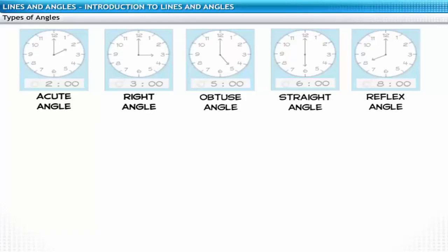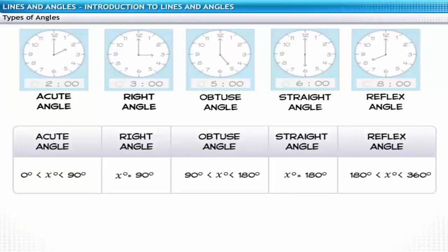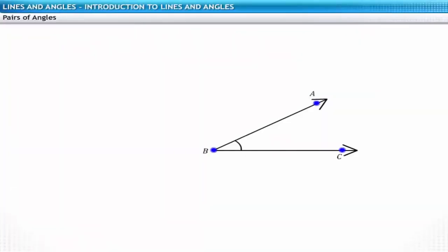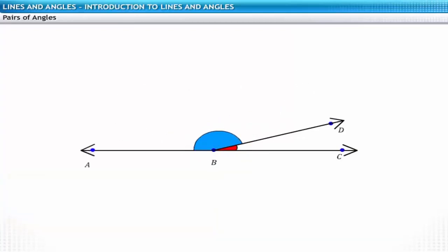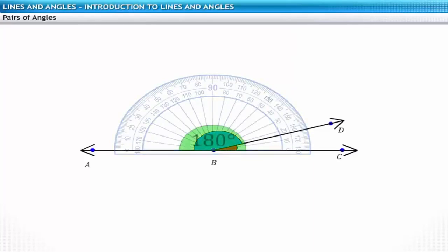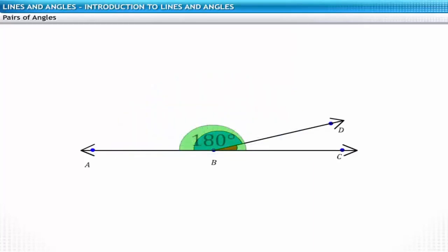Before moving on, let's summarize the definitions also shown on the screen. Consider the angle ABC. Pass the ray BD through the vertex such that it divides the angle ABC into 2. The two angles that are formed are angle ABD and angle DBC. These angles have a common arm BD and a common vertex B. Two angles are said to be adjacent if they have a common arm and a common vertex. Observe the adjacent angles ABD and DBC. The sum of these angles is equal to 180 degrees. Such a pair of angles is called a linear pair.